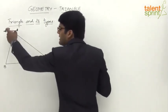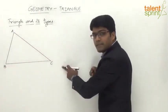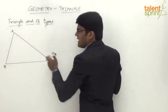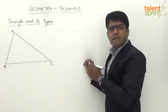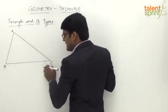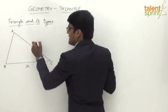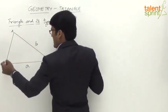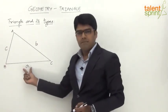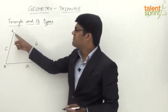In any triangle, we have three sides and three angles. The three sides are AB, BC, and AC. We name the length of side BC as 'a', the length of side AC as 'b', and the length of side AB as 'c'. The three angles can simply be called angle A, angle B, and angle C.